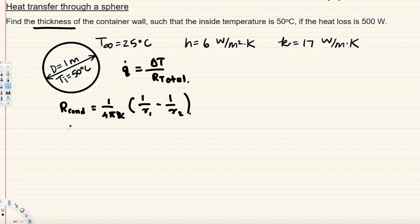We also have convection outside, so R-convection can be calculated using 1 over (h times surface area). The surface area for a spherical shape is 4πr², so this becomes 1 over (h times 4πr2²), using the outer radius since convection occurs at the outside.